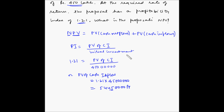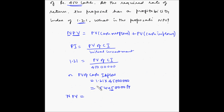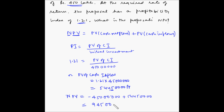We can now find the NPV. For the NPV calculation, since we are netting all cash outflows and inflows, for the cash outflows we have to consider the negative sign. So NPV equals minus 45,000,000 plus 54,450,000, which comes out to 9,450,000 rupees. This is the net present value for this proposal.